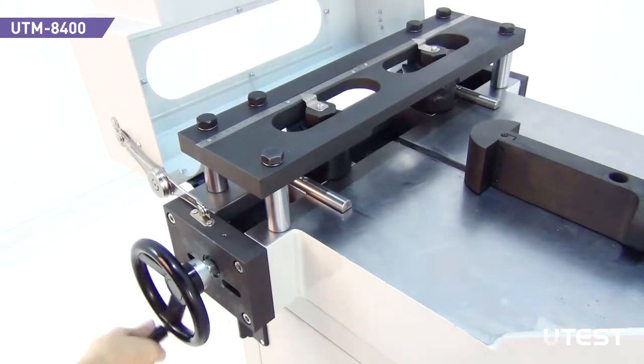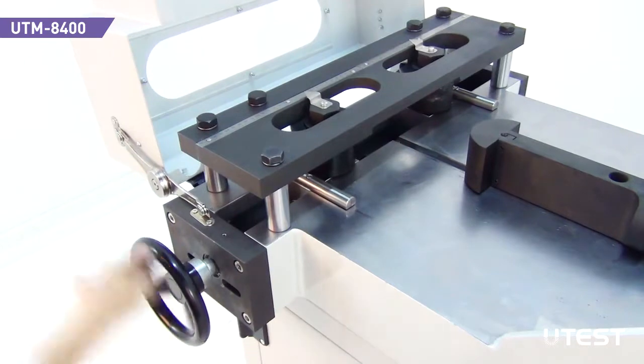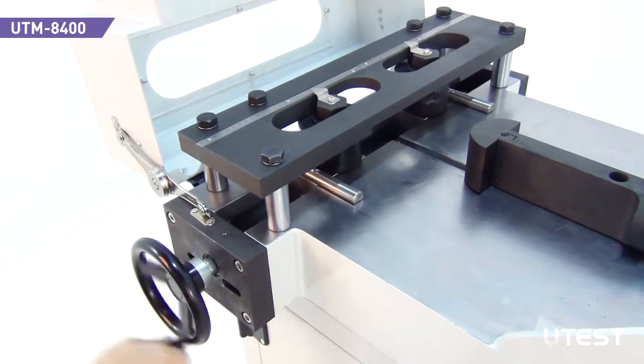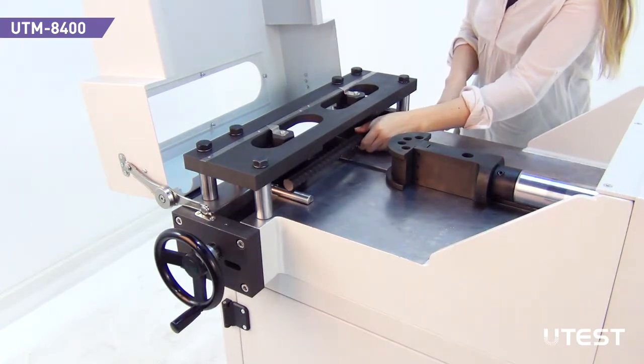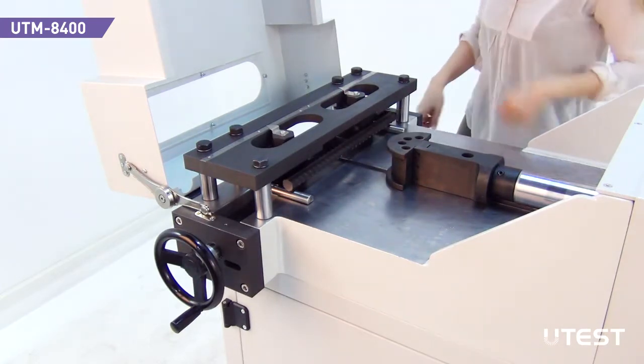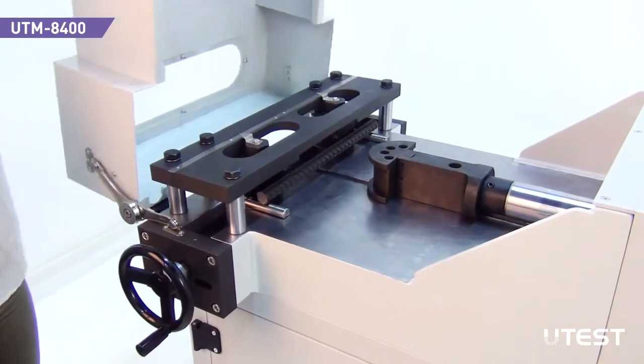Set the distance between the rollers according to the steel bar diameter or to the related standards. Position the steel bar to be tested against the rollers snugly. Close the cover lid.